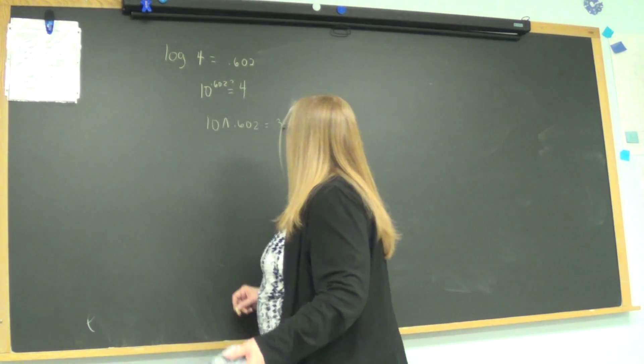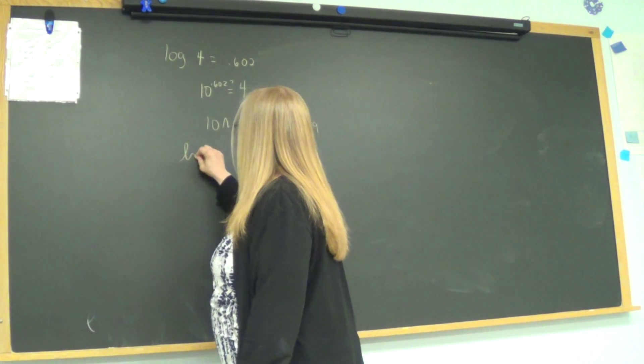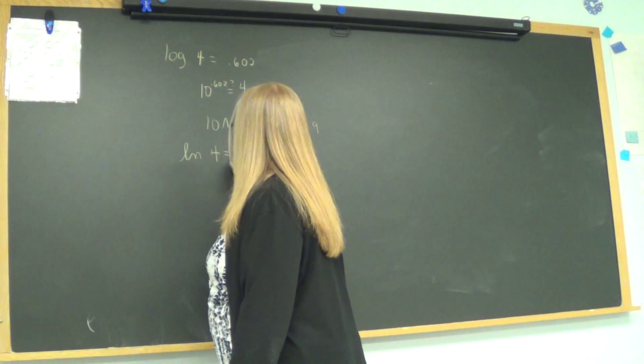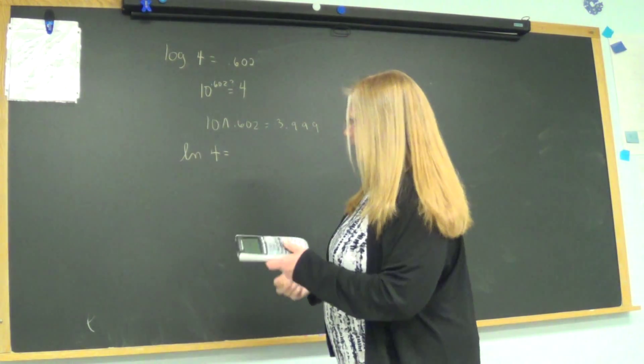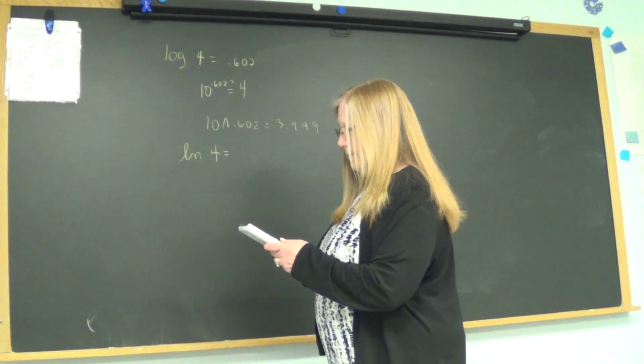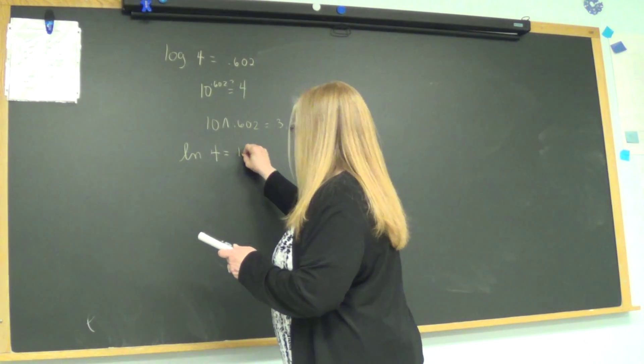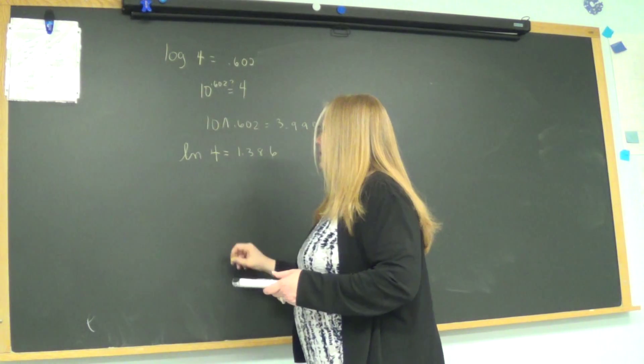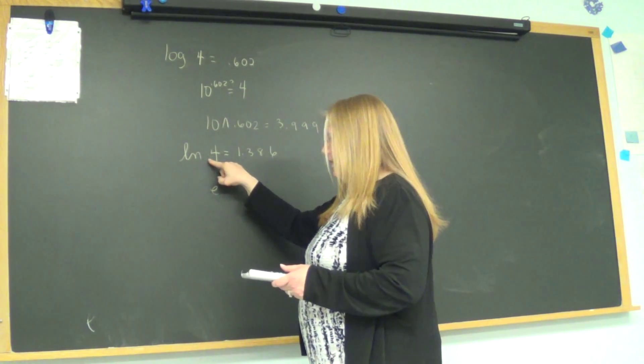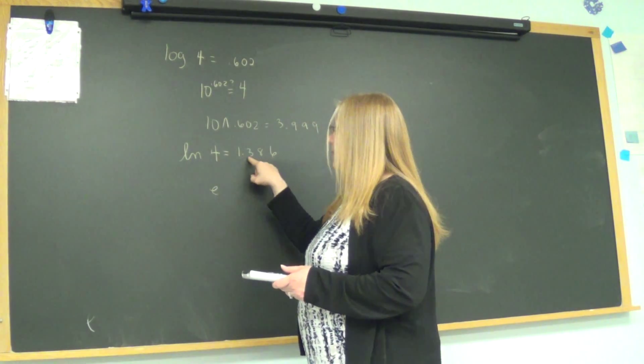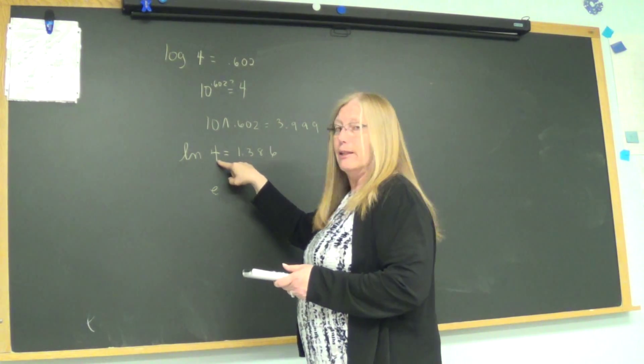So let's try that with an LN. So the LN of 4 would be a base E logarithm. So LN 4 is 1.386, we'll say. And does that make sense? The unwritten base is E. This is the exponent. It doesn't give me this number.